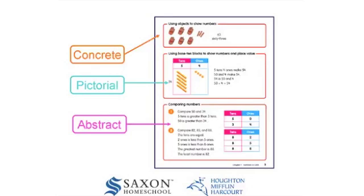What does concrete to pictorial to abstract mean? Concrete refers to the use of manipulatives, or physical objects, to illustrate math concepts. Objects are then represented pictorially within the text. Finally, math concepts are represented abstractly, with numerals and symbols. The concrete to pictorial to abstract progression is consistent throughout concept development and problem solving. Problems start simple and increase in complexity.